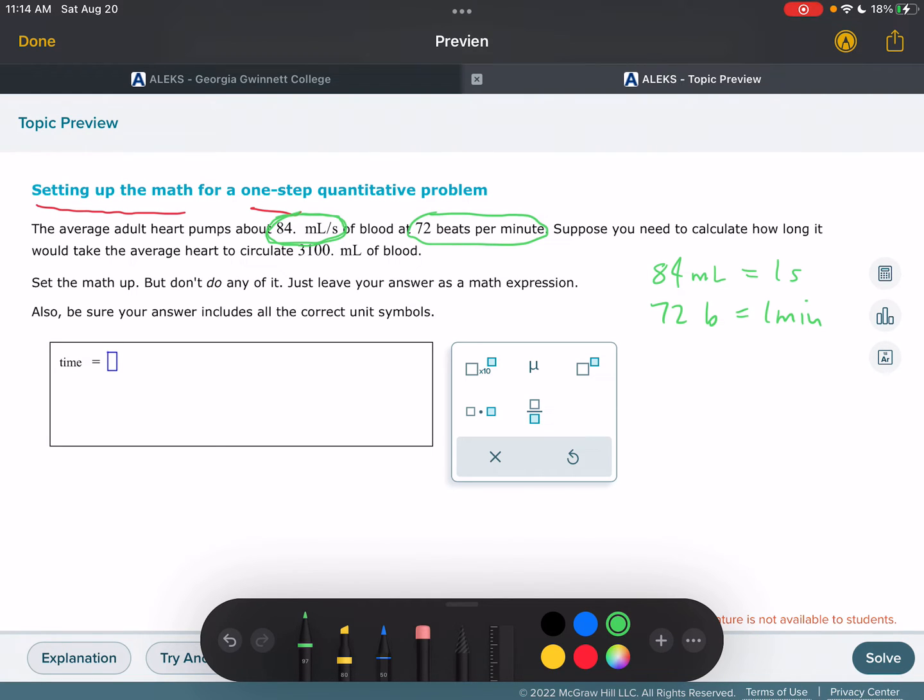Okay, and suppose you need to calculate how long it would take the average heart to circulate 3,100 milliliters of blood. Alright, so that's not a conversion factor, that's just a measurement, right? 3,100 milliliters of blood. So now that we've got that, let's go ahead and set our problem up.